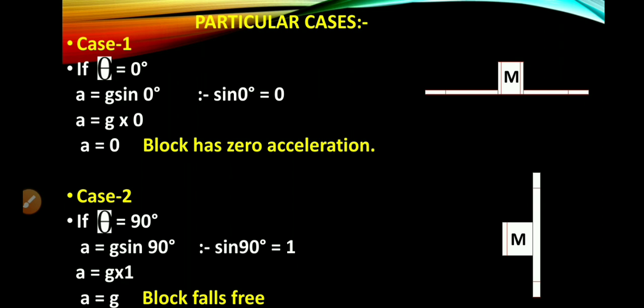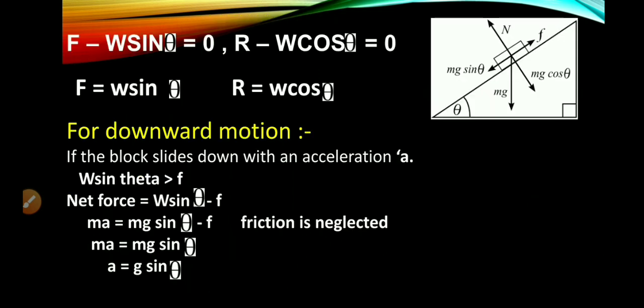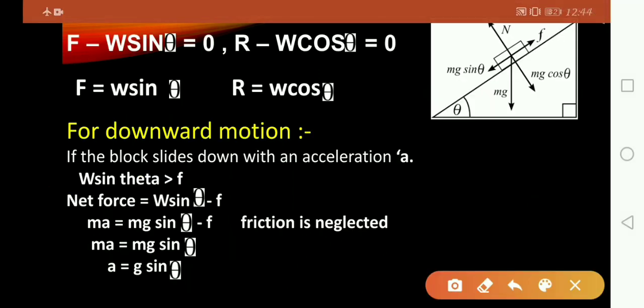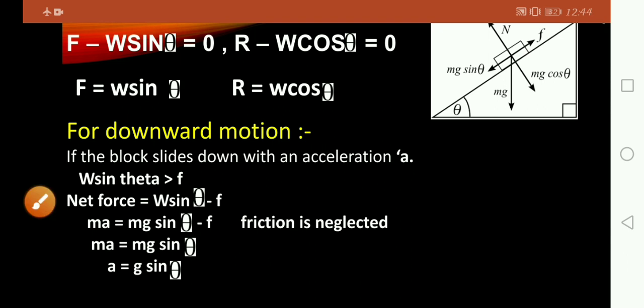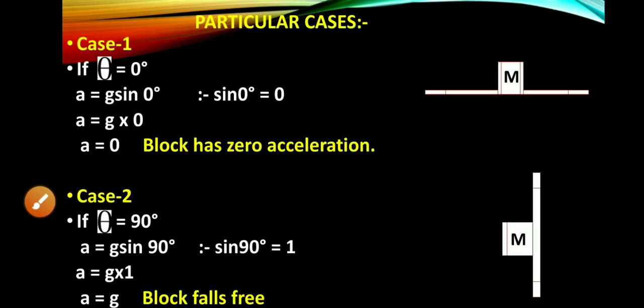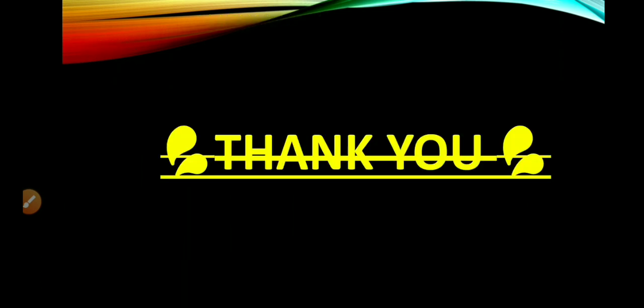The formula a equals g sin theta is very important. These are the cases when angle is zero degrees and ninety degrees. Thanks for listening to me.